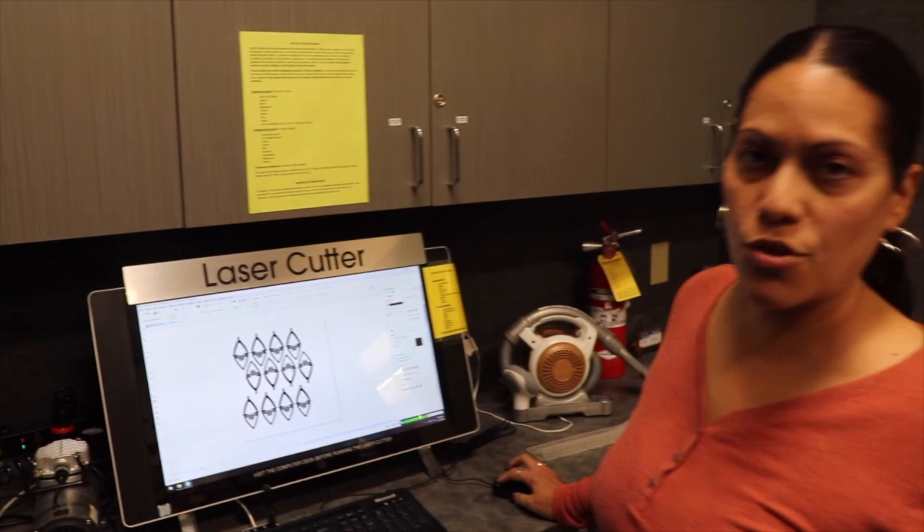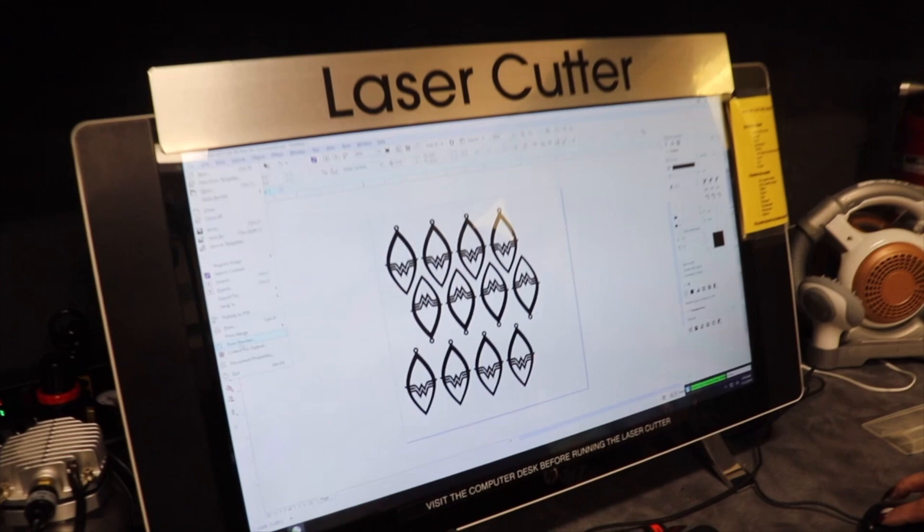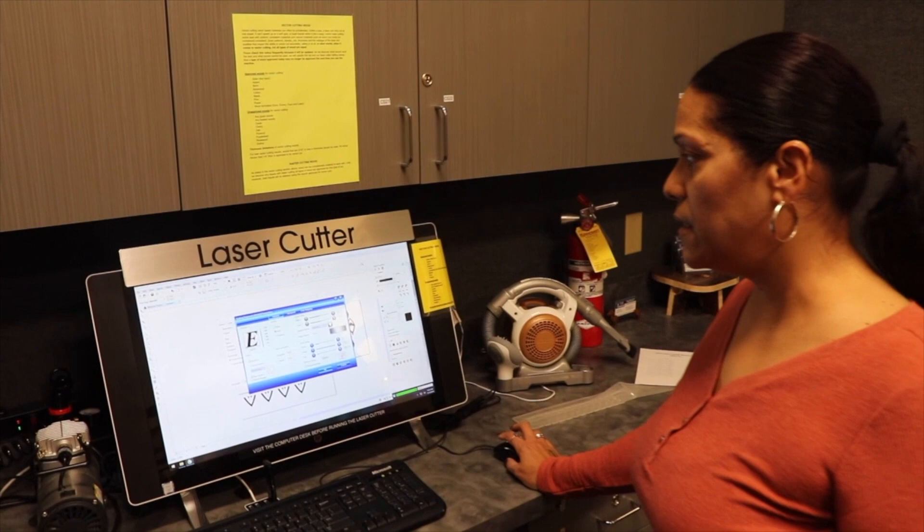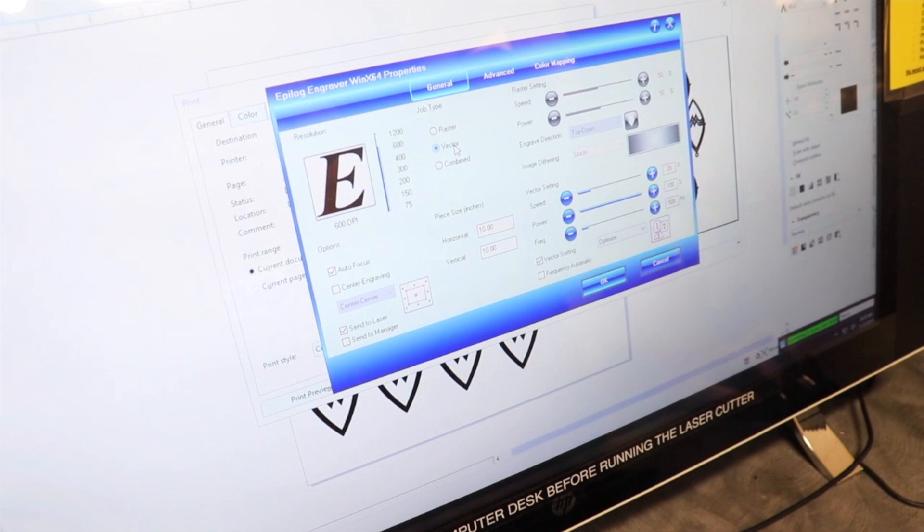It has to be set for hairline because it cuts through with hairline. I'll go over here to file and printing. I'll make settings on the cut settings and preferences, and the job type will be vector because it's a vector file.